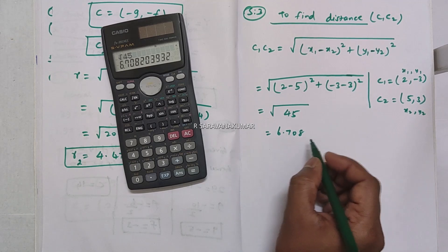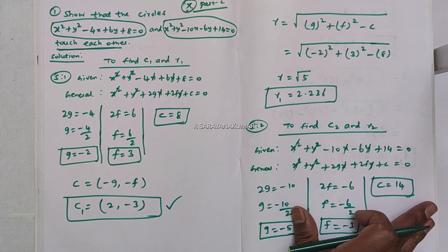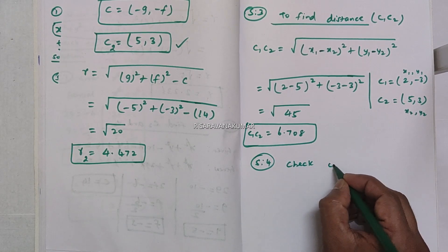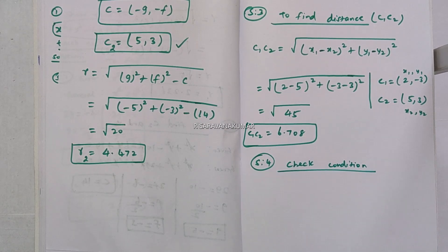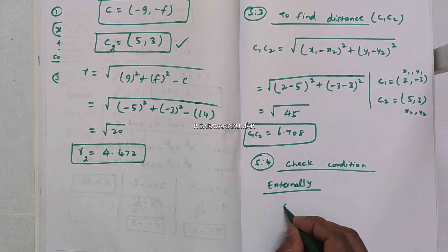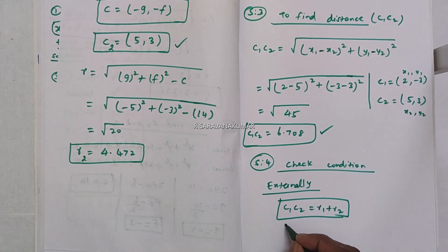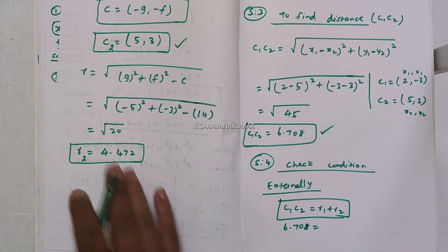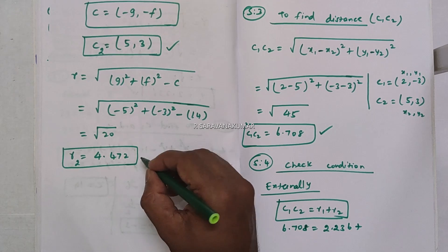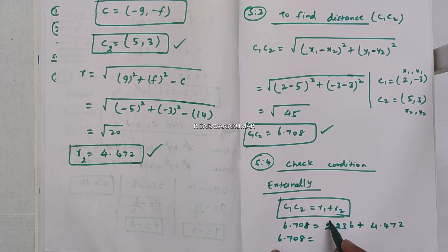Step 4 is the condition check. To verify the circles touch externally, we check if C1C2 = R1 + R2. The distance C1C2 = 6.708. R1 = 2.236 and R2 = 4.472. Adding: 2.236 + 4.472 = 6.708. Since the left-hand side equals the right-hand side, the two circles touch each other externally.